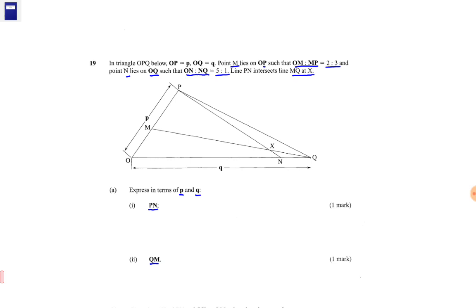Now, we need to interpret the statement that has been given. In this triangle, OP is vector P, and OQ is vector Q. Then M lies on OP such that OM to MP is 2 to 3.